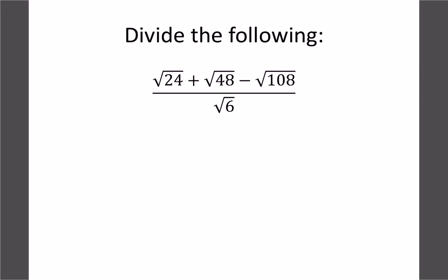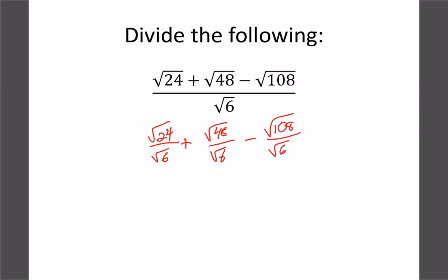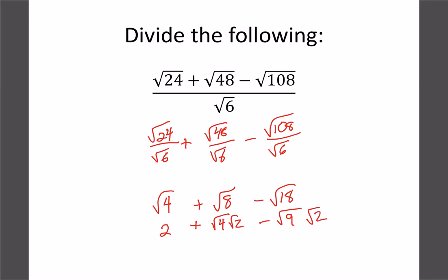For the last question with multiple terms in the numerator: (24 root 4 minus 48 root 8 plus 108 root 2) divided by 6. Since there's only one term on the bottom, split it into three separate fractions: 24/6 root 4, minus 48/6 root 8, plus 108/6 root 2. That gives 4 root 4, minus 8 root 8, plus 18 root 2. Simplify: root 4 is 2, root 8 is 2 root 2, root 9 is 3. That gives 2 root 2 minus 3 root 2, and combining: (2 minus 3) root 2 equals negative root 2 as the final answer.